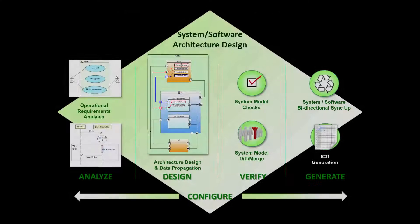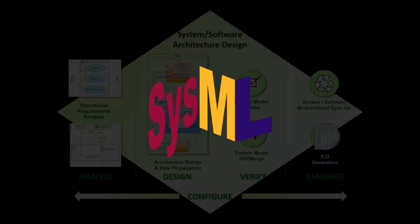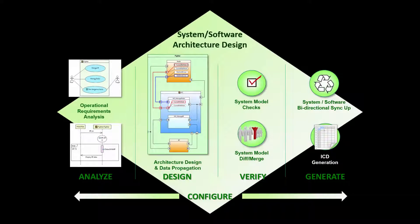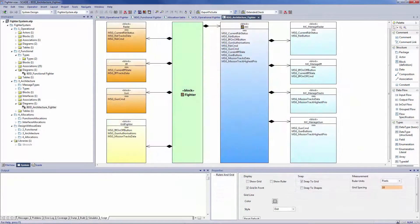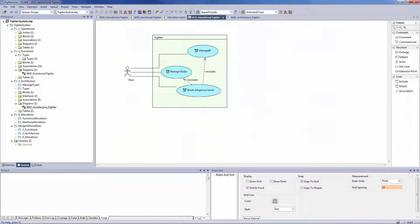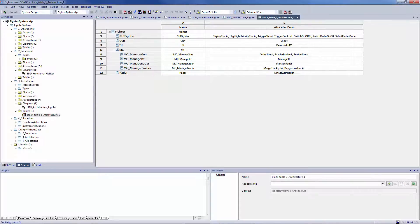SCADE System is a system design product line for complex embedded systems modeling based on the standard SysML notation. SCADE System augments this underlying capability and provides a user-friendly and intuitive model-based environment for system engineers. The objectives of the models are to help the intellectual process of structuring ideas and allowing automated checks and artifact generation.